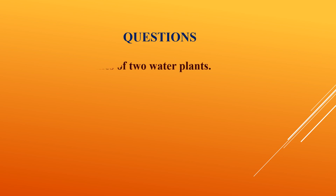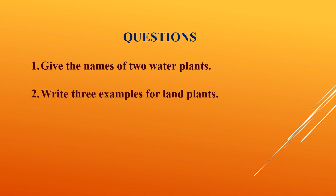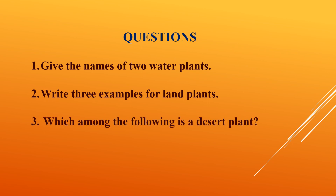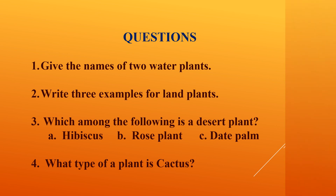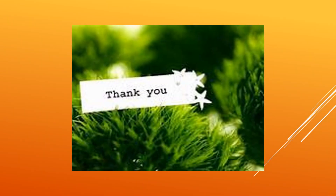Questions. Question number one: give the names of two water plants. Question number two: write three examples for land plants. Question number three: which among the following is a desert plant? Option A: hibiscus, option B: rose plant, option C: date palm. Fourth and the last question: what type of plant is cactus? That's all for today, thank you.